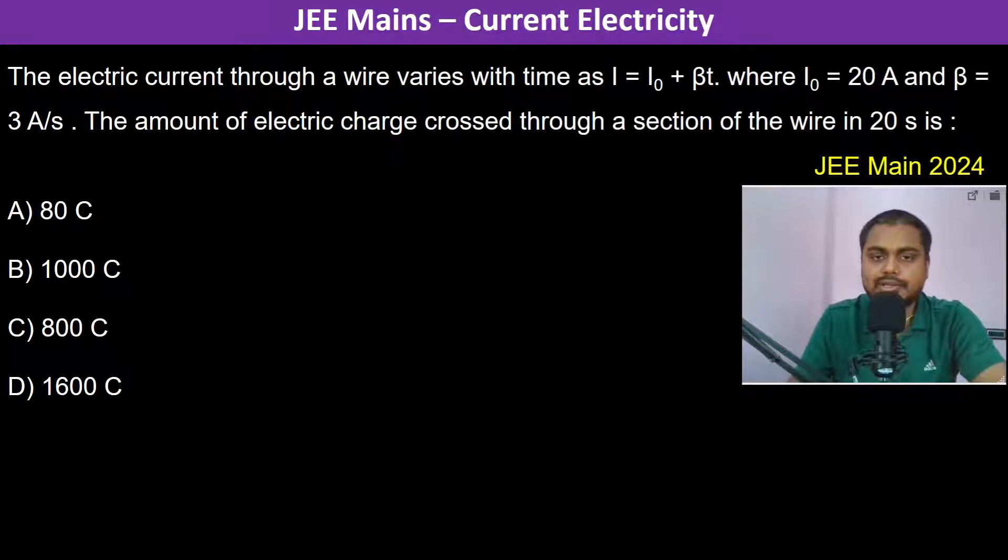The electric current through a wire varies with time as I equals I naught plus beta T, where I naught is 20 ampere and beta is 3 ampere per second. The amount of electric charge passing through the section of the wire in 20 seconds.